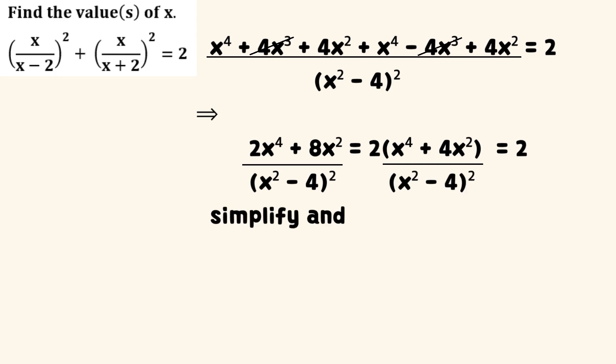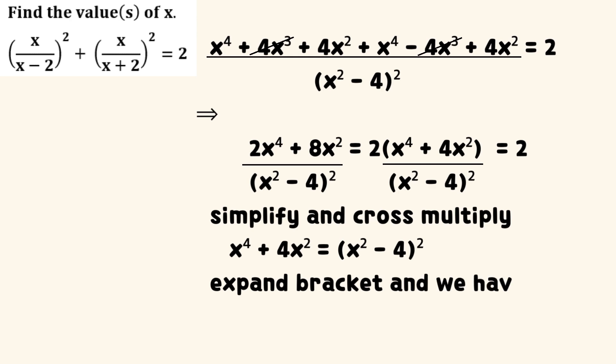Cross multiply to obtain that the sum of x to the exponent of 4 and 4 times the square of x equals the square of the difference between the square of x and 4. Expand the bracket.